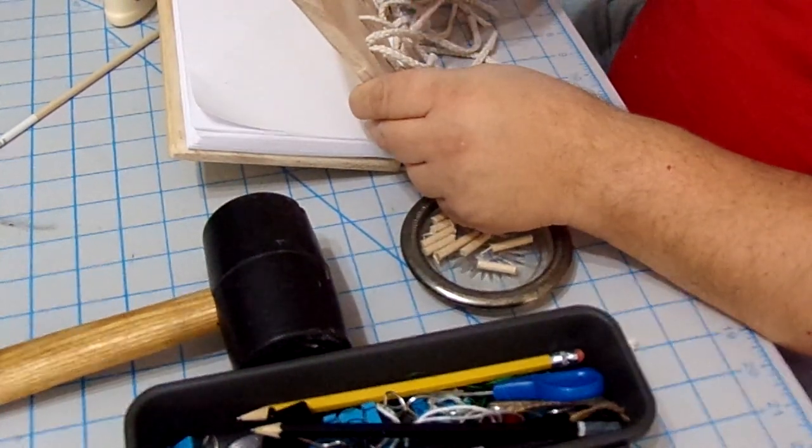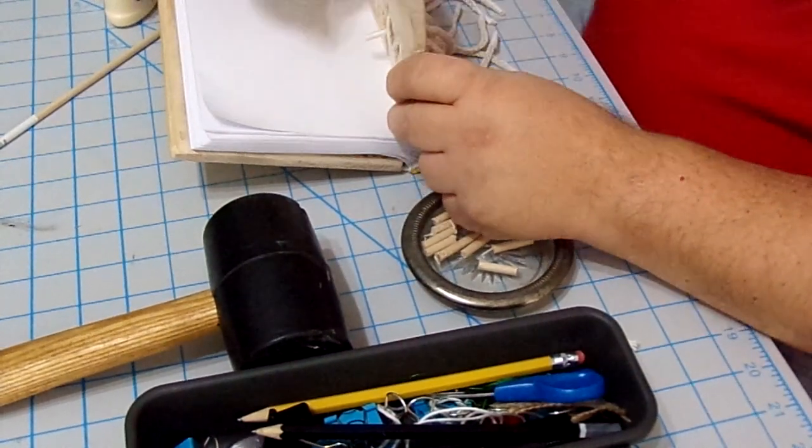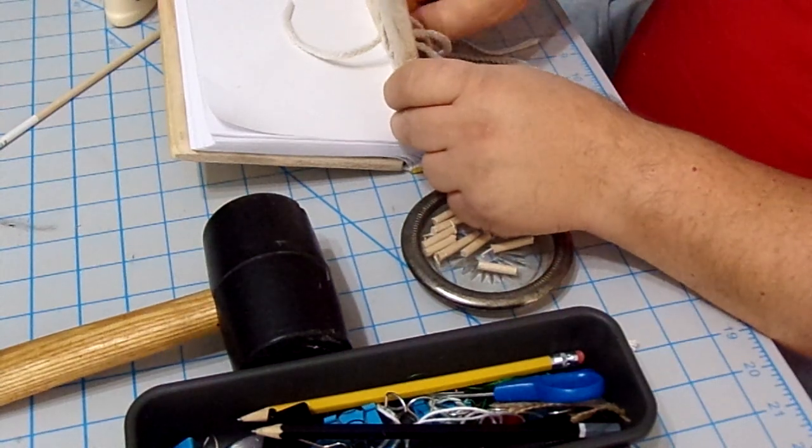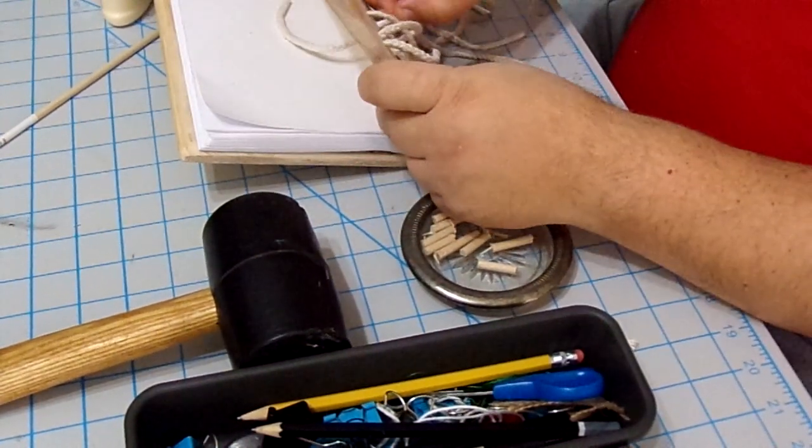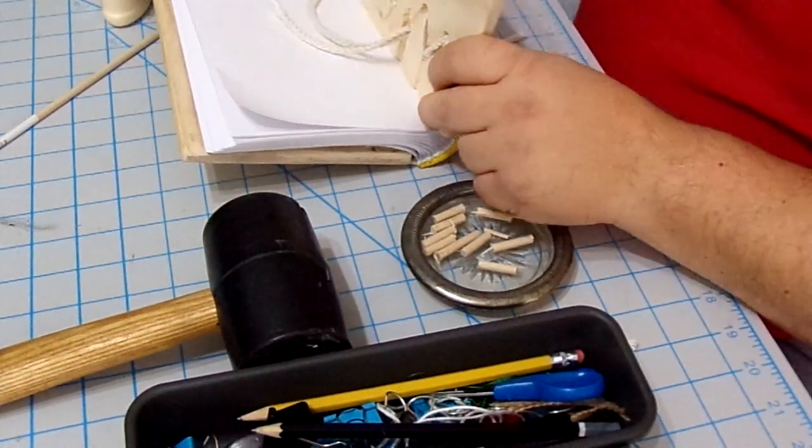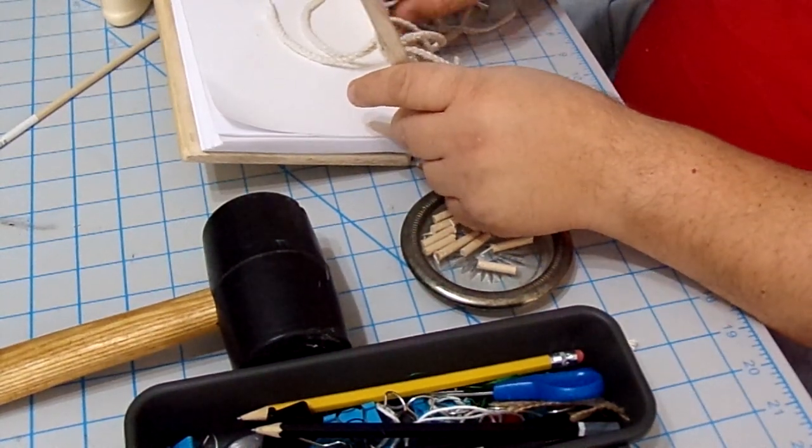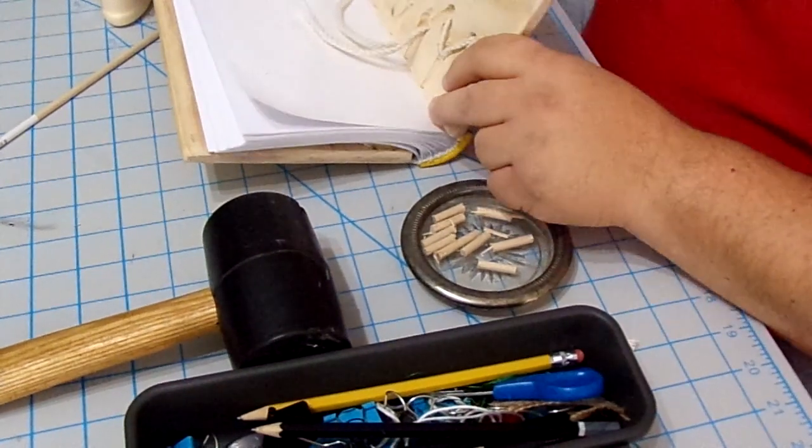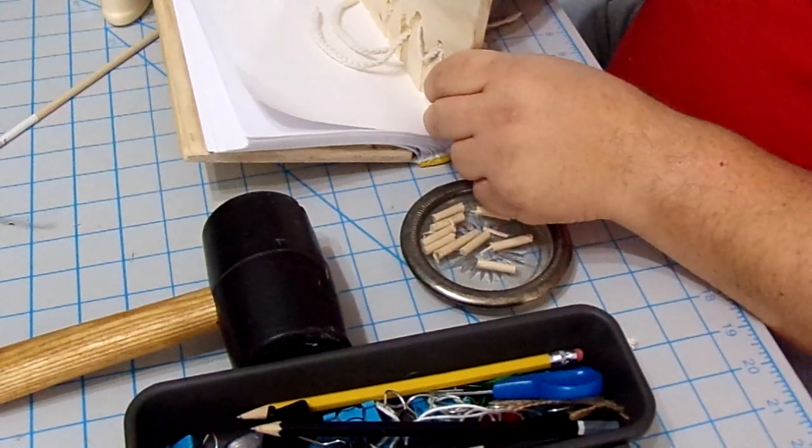This is not that long of a video, because it's not going to take that long to do. So, you're just going to pull that out. Make sure that as you're doing this, you're leaving a little flexibility here. So, you want to leave a little bit of flex to it, so that the boards can close onto the book itself.